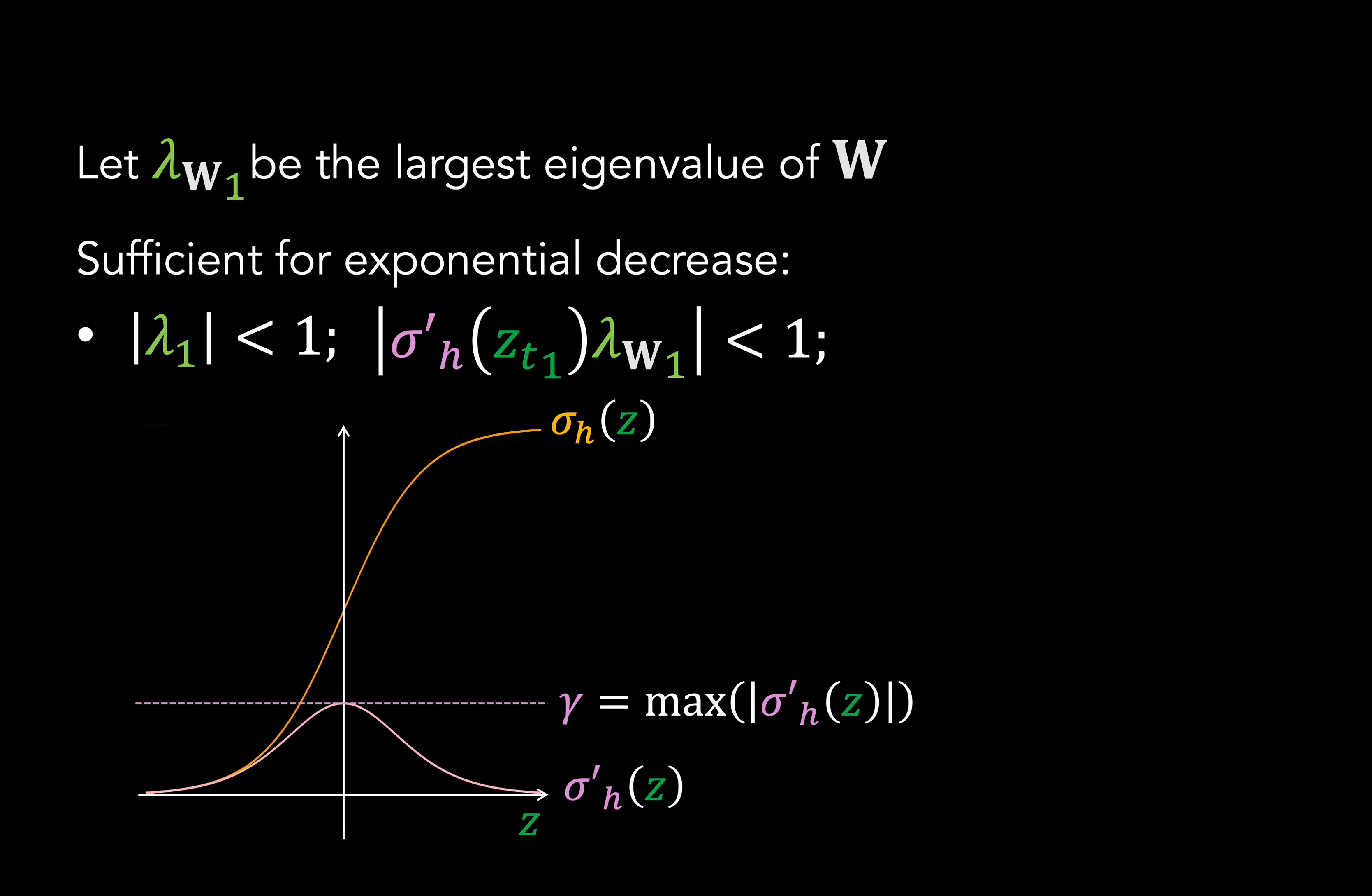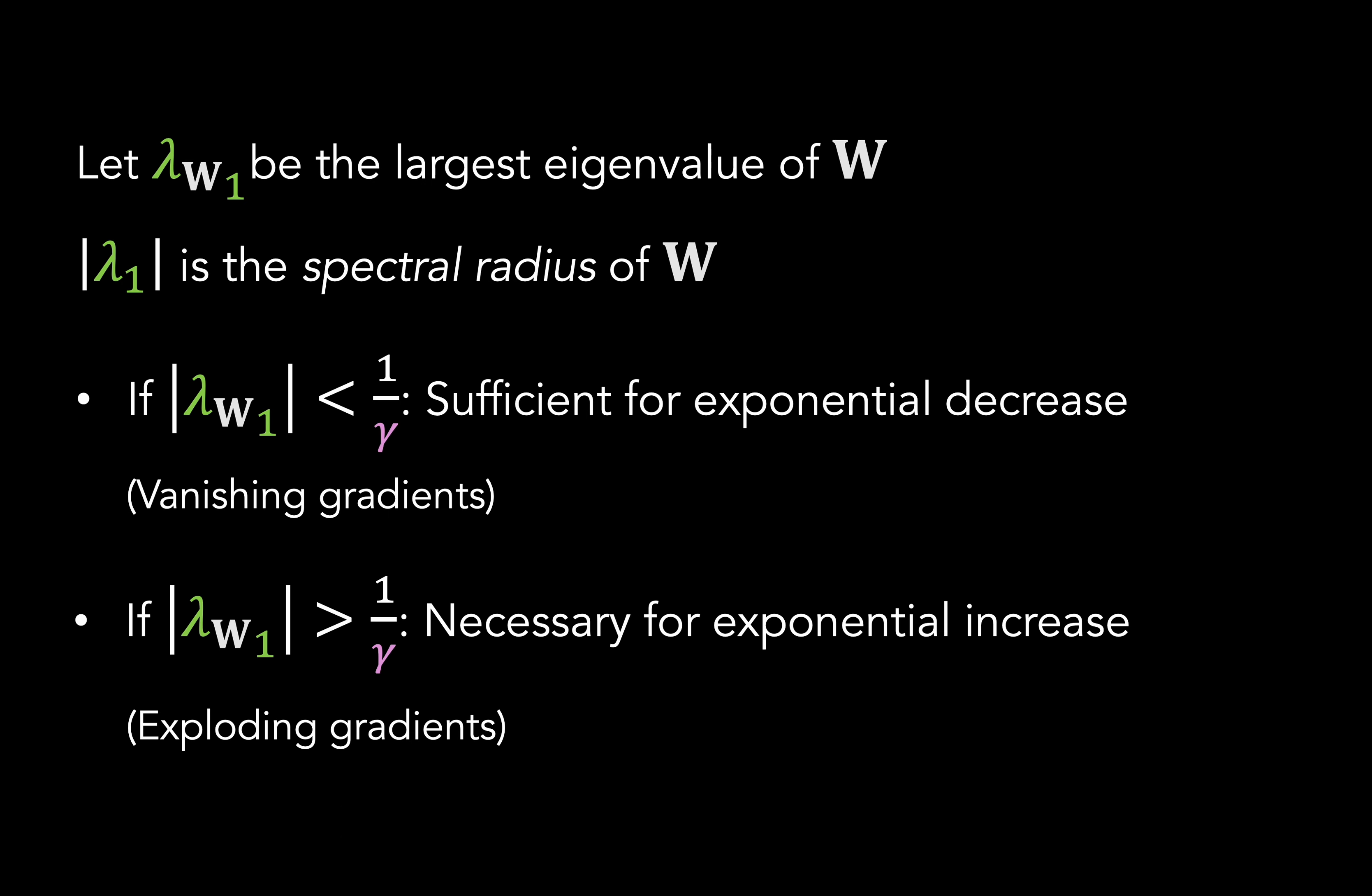It's clear that if the spectral radius of W is less than 1 over gamma, we're going to get exponential decrease, since now this whole term can never be greater than 1. And similarly, we can derive a necessary condition for exponential increase. So this is how we can phrase our conditions in terms of our weight matrix W and our activation function sigma, whose derivative has a maximum absolute value gamma.